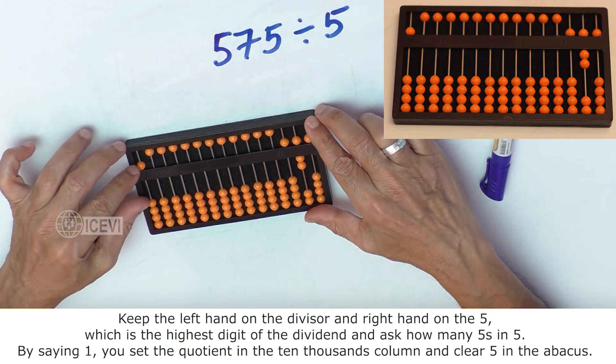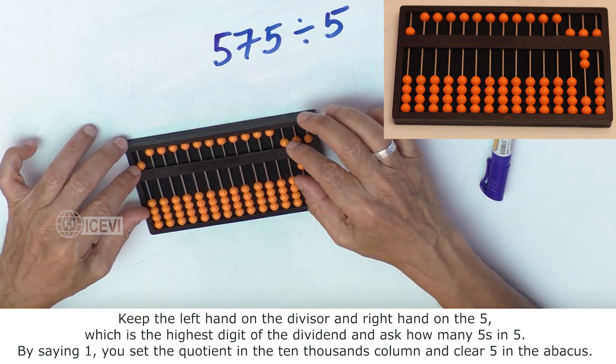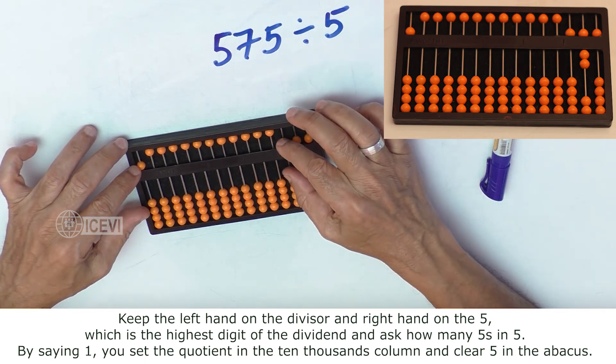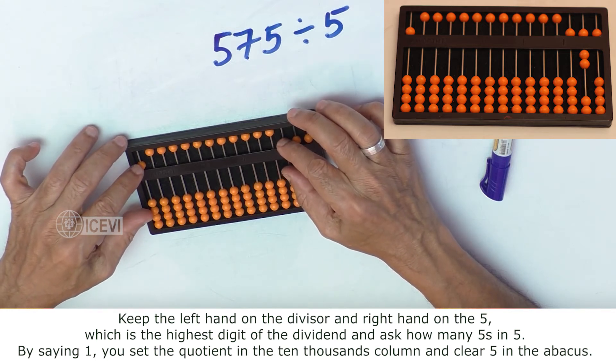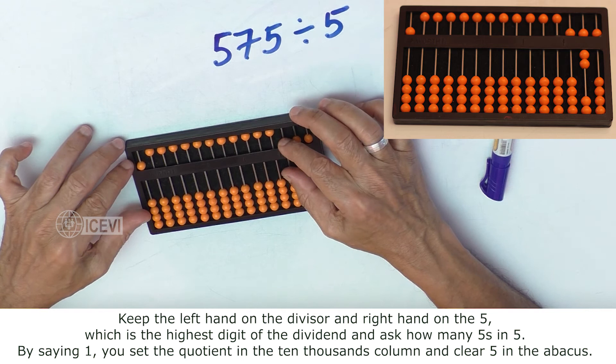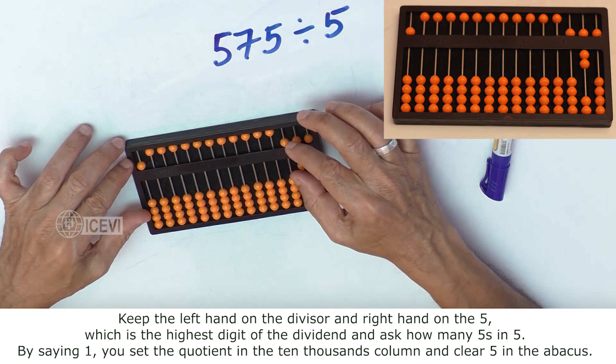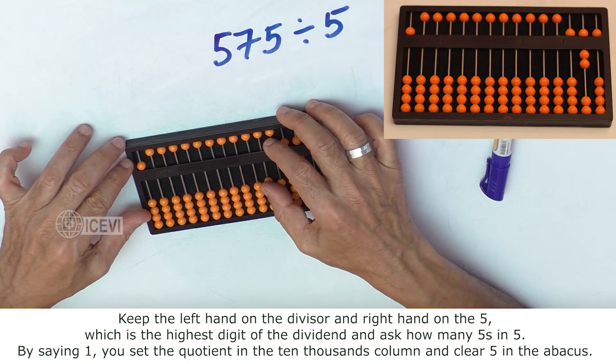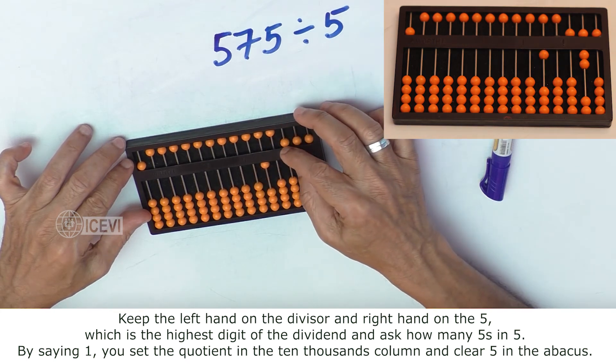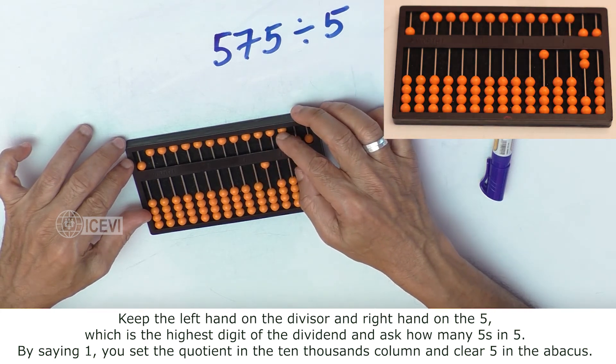Keep the left hand on the divisor and right hand on the highest digit of the dividend, that is 5, and ask how many 5's in 5. By saying 1, you set the quotient in the tens column and clear 5 in the Abacus.